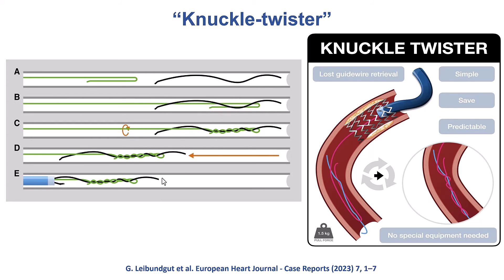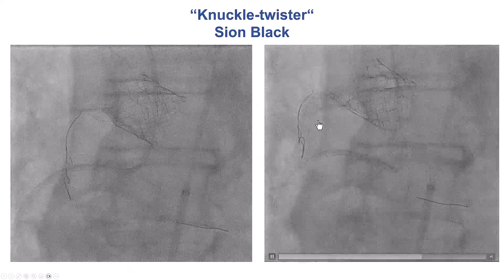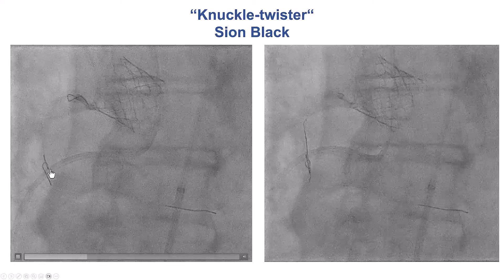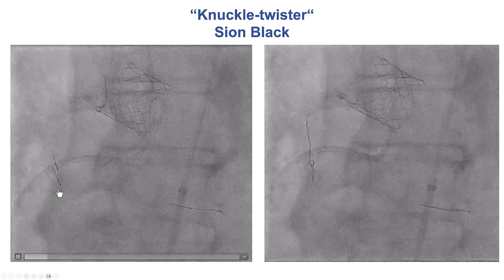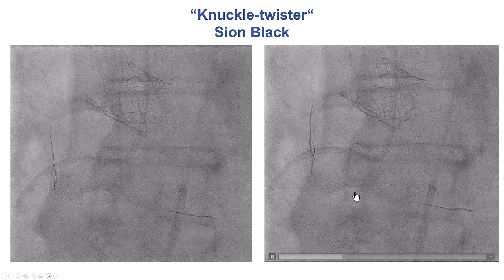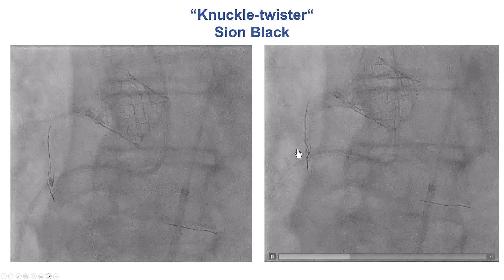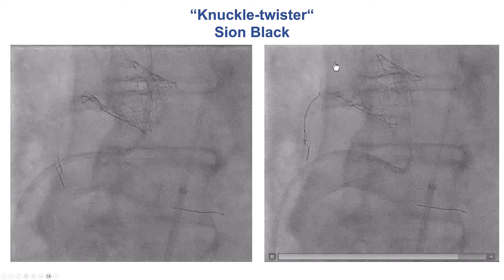One technique recently presented by Gregor Leibungud is the knuckle twister technique. A polymer-jacketed guide wire is bent two to three centimeters from the tip, advanced inside the vessel along the wire fragment, then rotated several times to entangle the fragment, and everything is removed. We tried this with a C-on-black guide wire, putting a big bend and advancing distal to the fragment, then pulling backwards. There was some movement, but despite twirling, the wire fragment fell off.